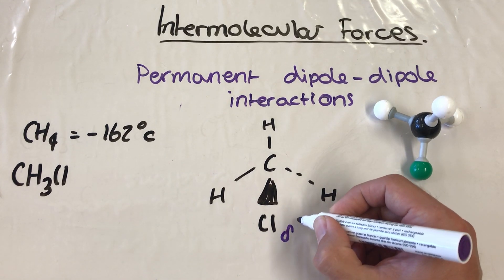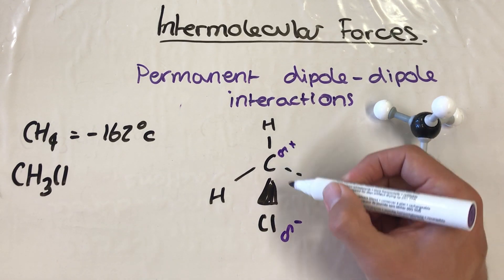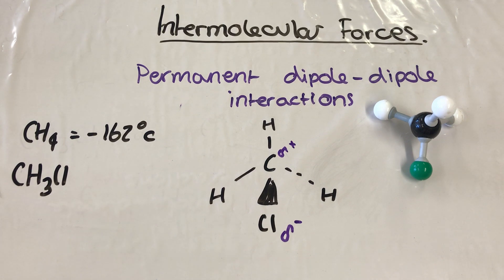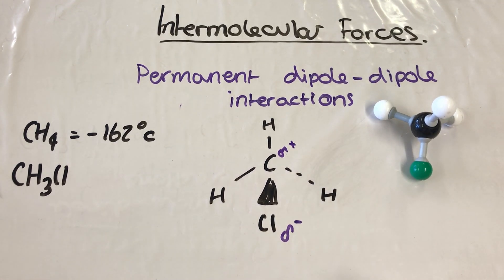you'll know that this bond here is polarised because the chlorine is more electronegative than the carbon, so the chlorine is drawing the electrons more towards itself within that covalent bond. So we have ourselves here a polarised molecule. Now this polarity is permanent, this is a permanent dipole that has been formed here.